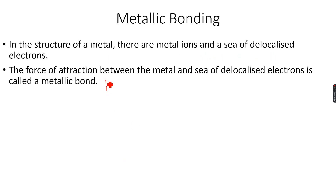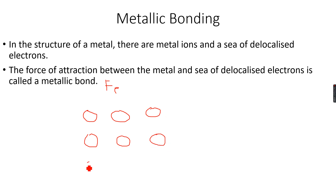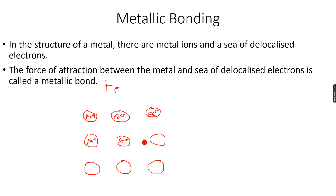Let's take the example of iron. In the lattice structure of iron, there will be iron ions — Fe²⁺ ions. We write the ion symbol inside the iron to show which iron it is. These are Fe²⁺ ions, and to form Fe²⁺, each iron atom must have lost two electrons.